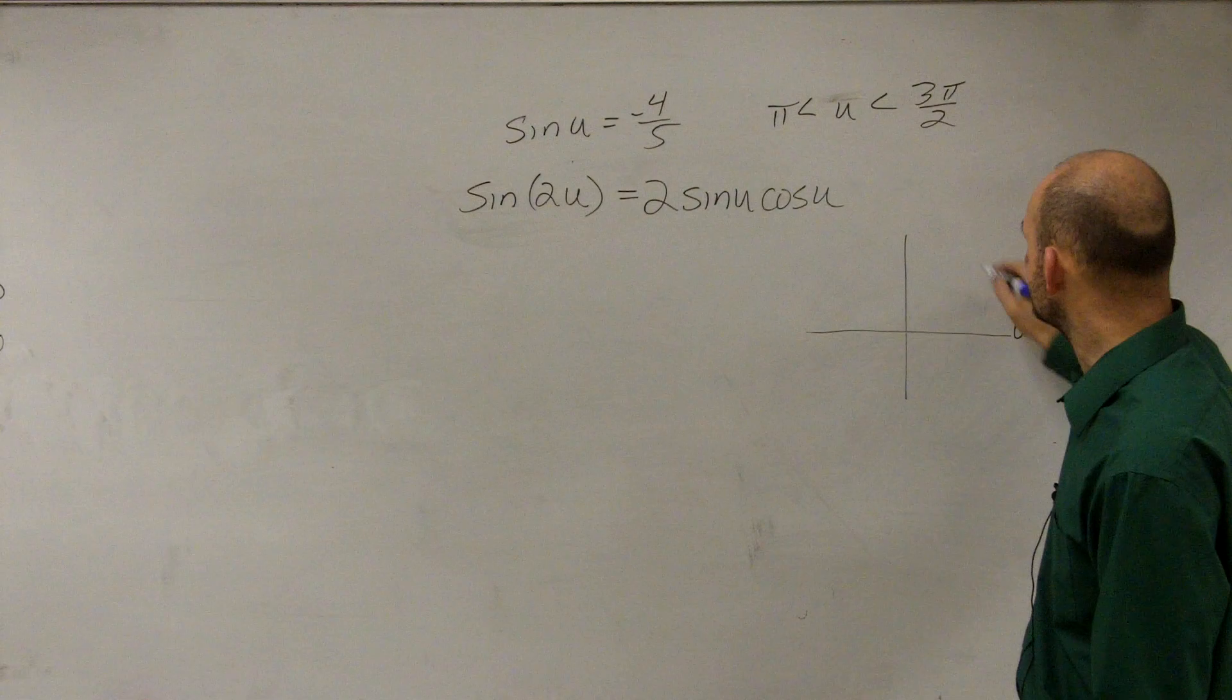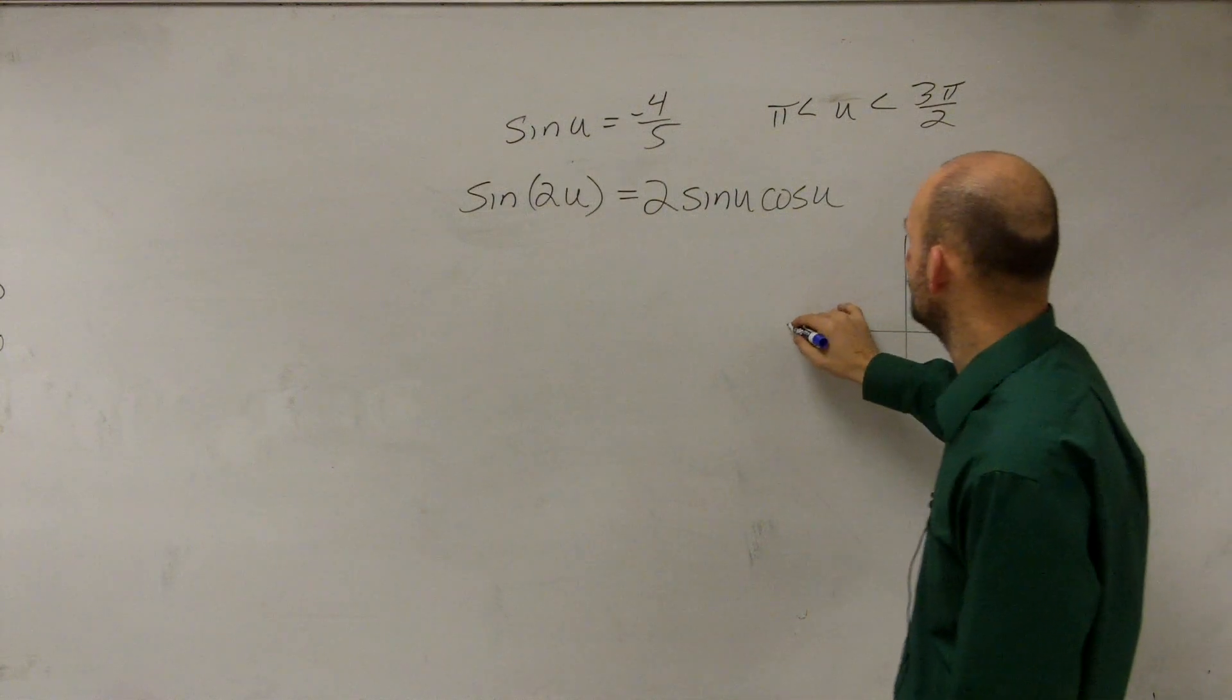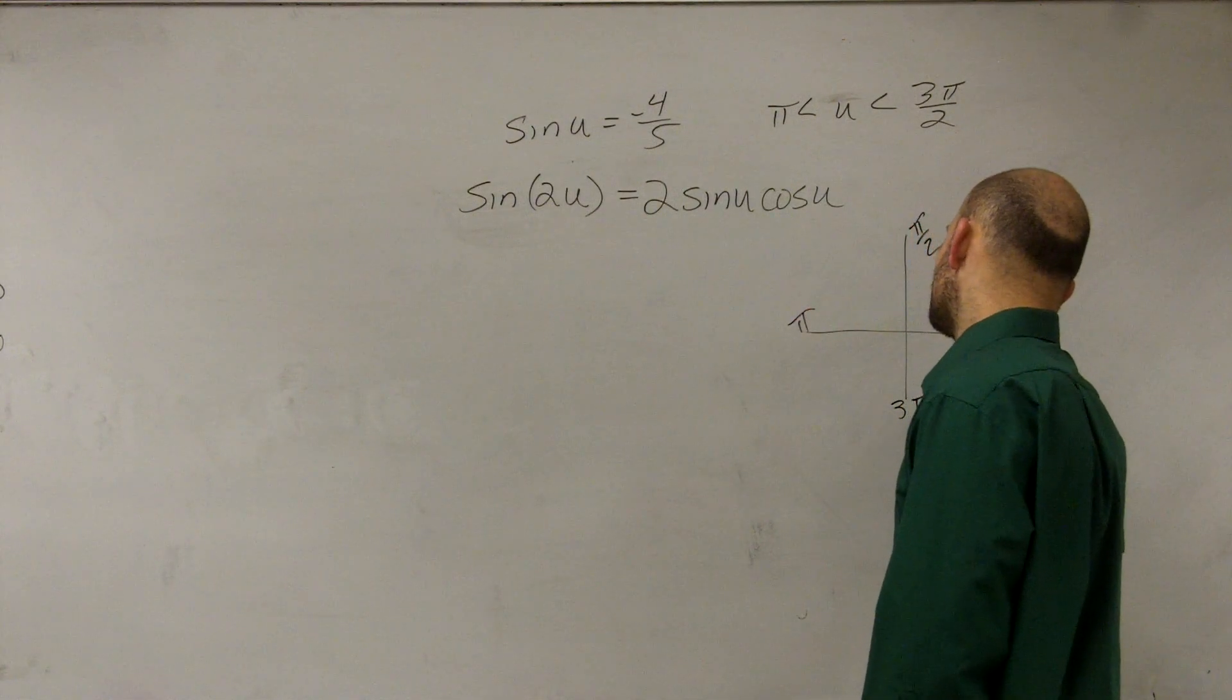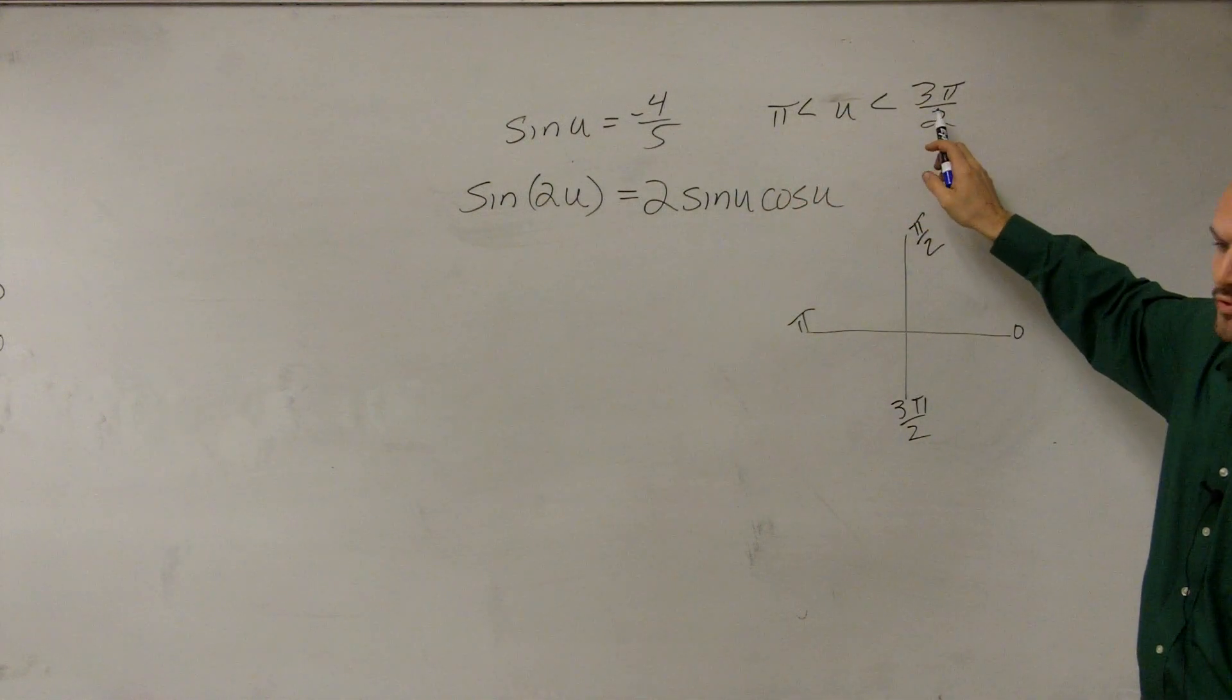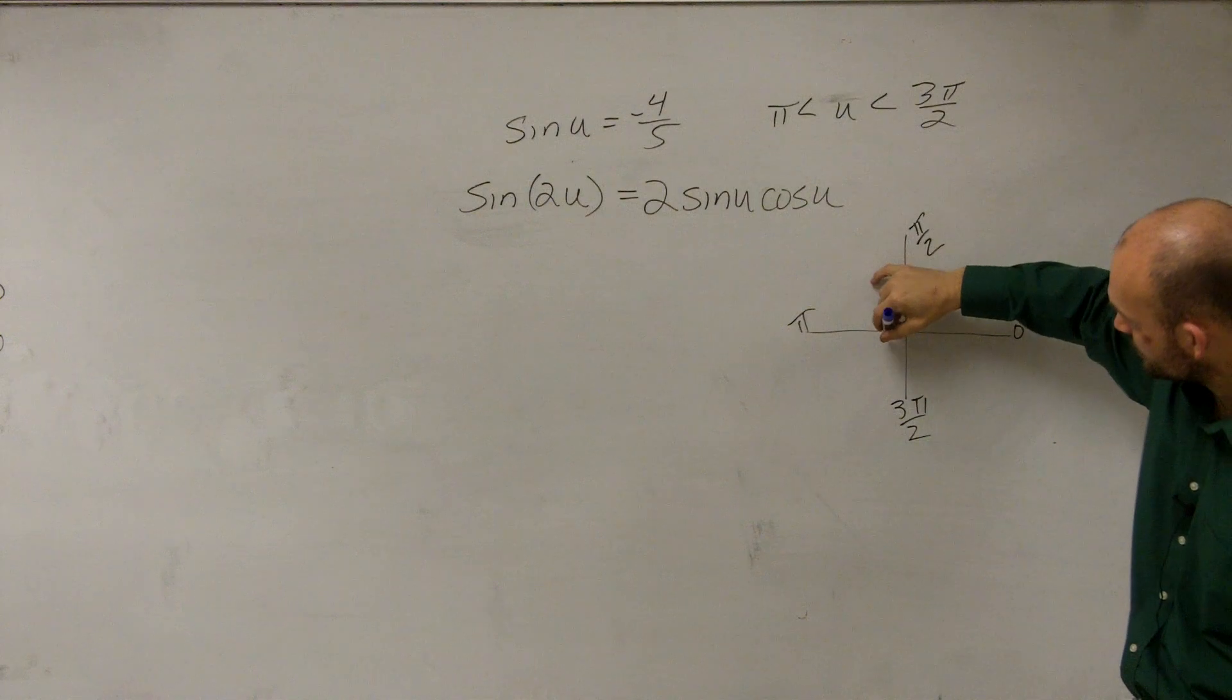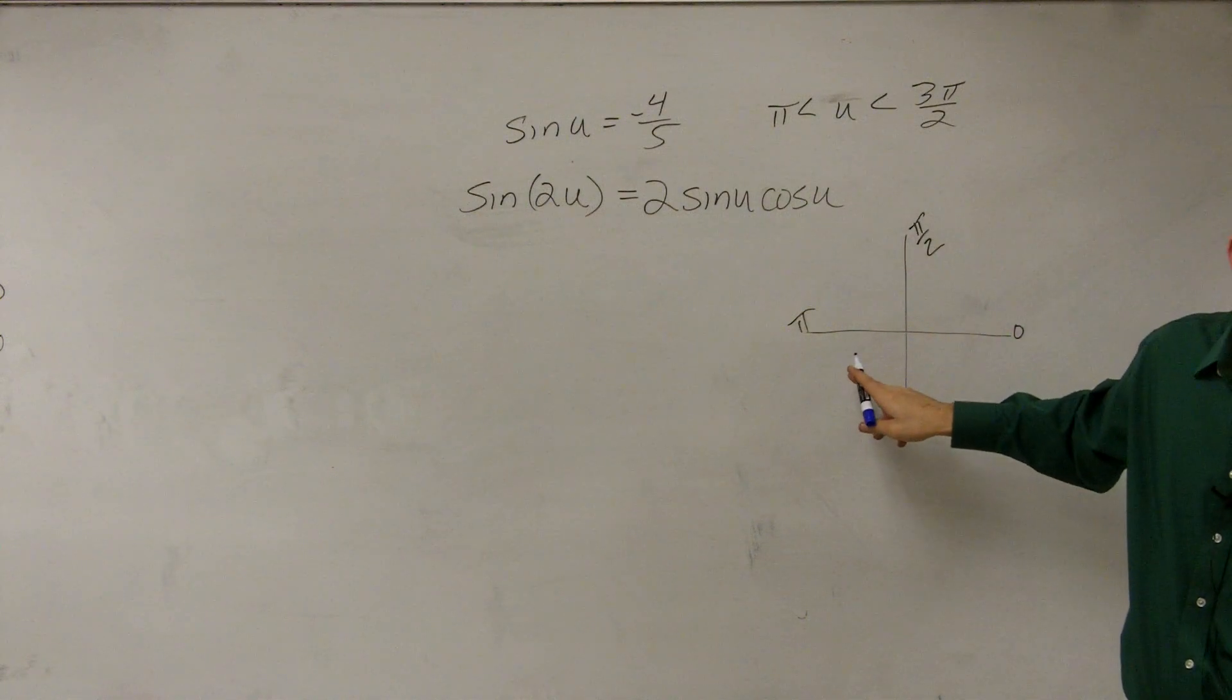So it says our constraint is if here's 0, here's π over 2, here's π, here's 3π over 2. So it says our angle has to be greater than π, but less than 3π over 2. So therefore, our angle, our triangle needs to be in this quadrant.